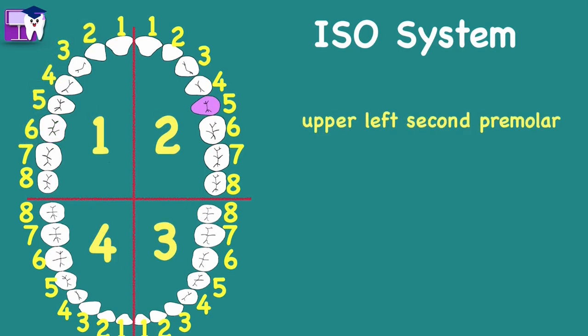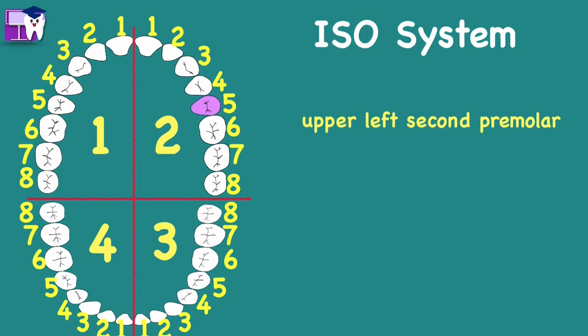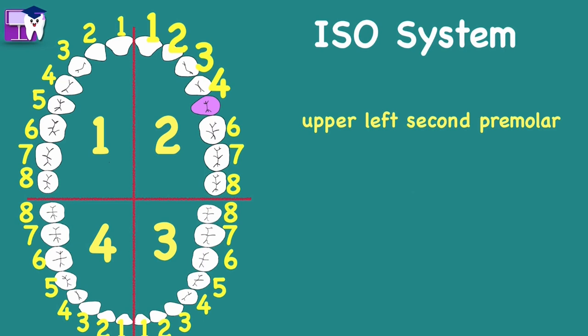Another example: the upper left second premolar is located in the second quadrant, so write number 2. Remember that the quadrant number is the first digit, while the second number identifies the individual tooth. Counting from the central incisor, the second premolar is counted as number 5. Write 2 and 5 — say this is 2-5, not 25.